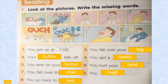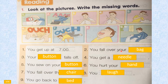On your workbook, page 30. Number one — look at the pictures, write the missing words. Number one: you get up at seven. Number two: you fall over your bag. Number three: your button falls off. Number four: you get a needle.